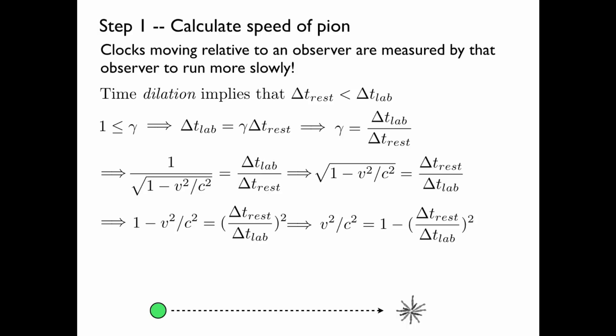Moving forward, we'll have v squared over c squared on a side by itself. Then we can multiply both sides by c and take the square root.